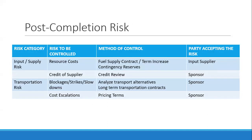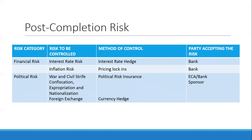Other post-completion risks to consider include supply risk, controlled through fuel supply contracts and contingencies; transportation risk, managed with long-term transportation contracts to control strikes, slowdowns, and cost escalations; financial risk such as interest rate and inflation, managed through interest rate hedges and pricing lock-ins; and political risk, which can be controlled through political risk insurance.